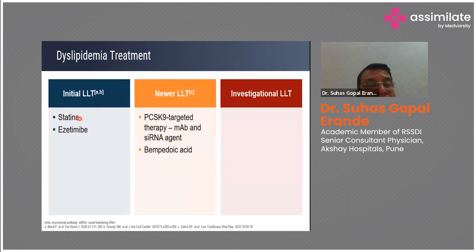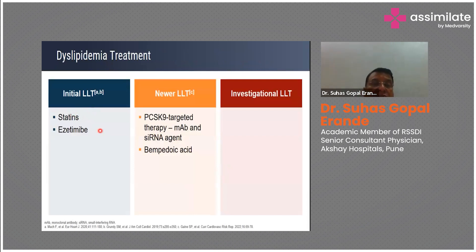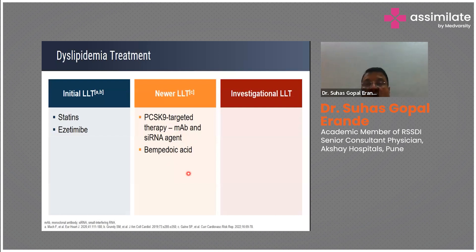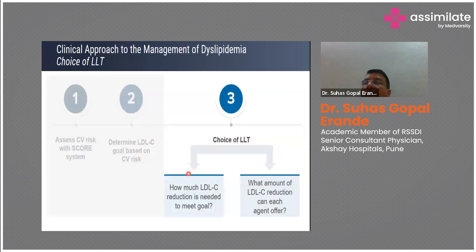Initiate lipid-lowering therapy either with statins, or sometimes with statins and ezetimibe. If the LDL target is not achieved with high-intensity statins, or if statins are not tolerated, you have the option of using PCSK9-targeted therapy or bempedoic acid. There are more drugs under investigation — inclisiran and others — but we'll discuss those in another session.